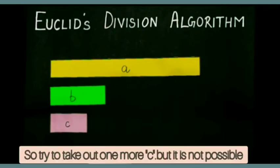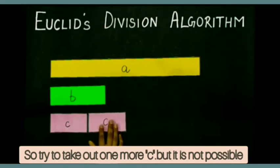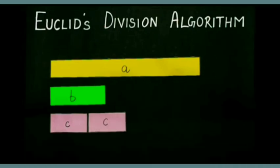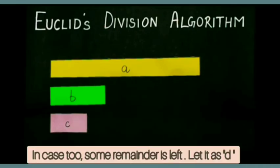Now try to take out one more C but it is not possible. In this case too, there is some remainder left that is called as D.